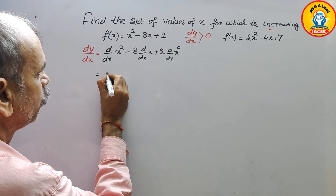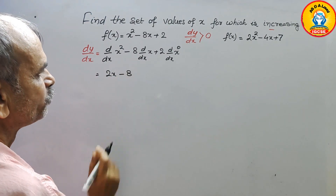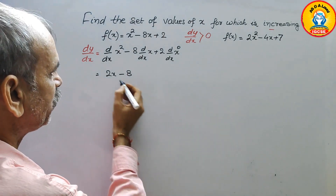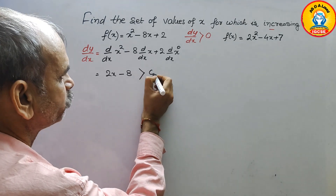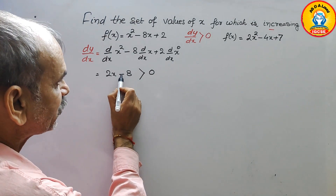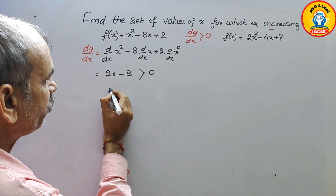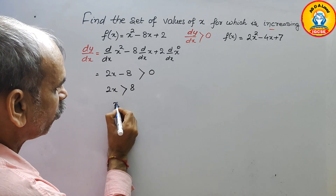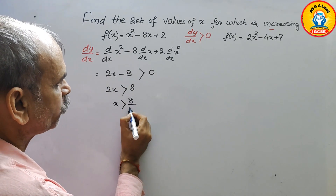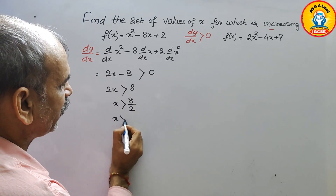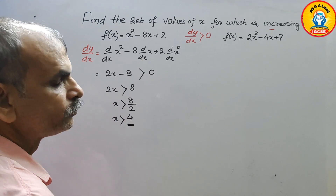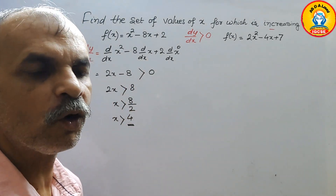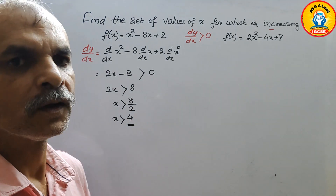Differentiating gives dy/dx = 2x - 8. For the function to be increasing, dy/dx should be greater than 0. So we need 2x - 8 > 0, which means 2x > 8, so x > 8/2, therefore x is greater than 4.